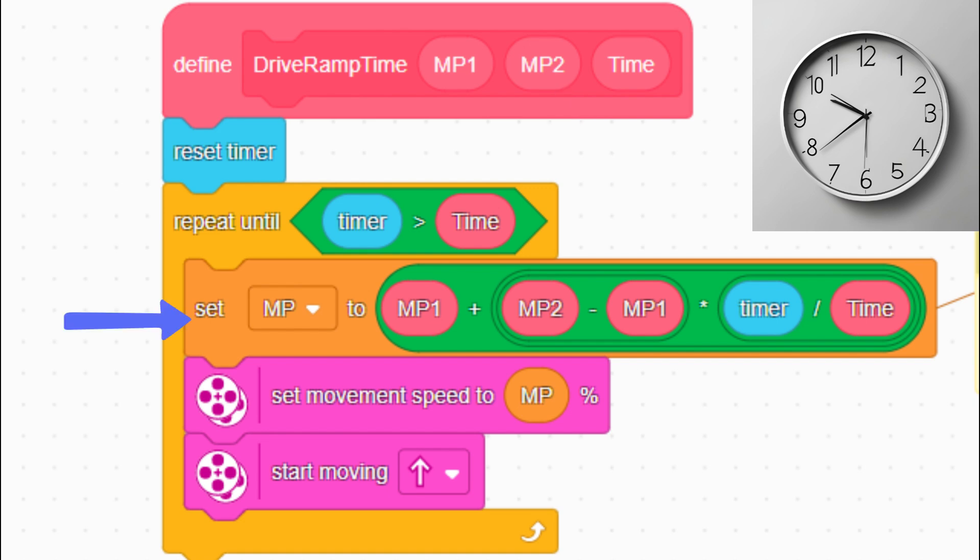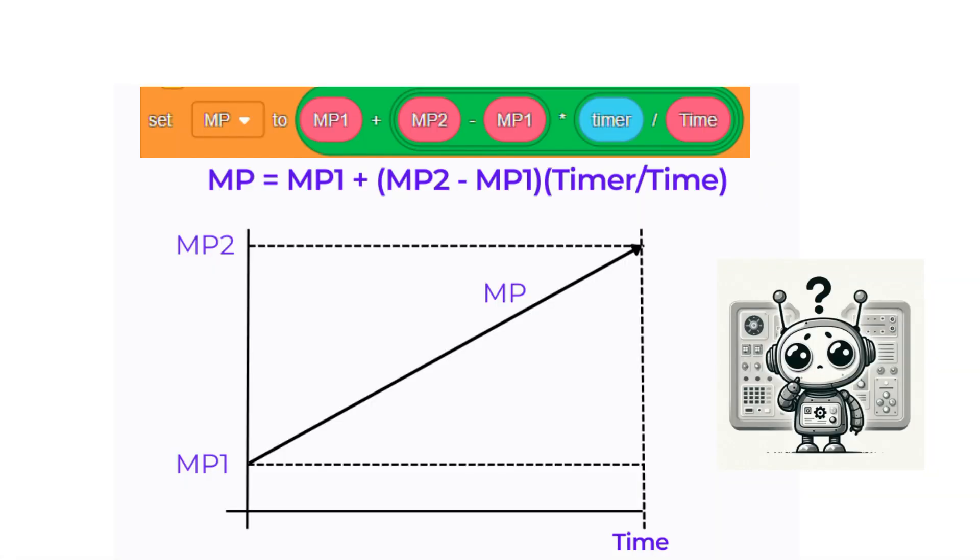So we make variable MP using the equation, then we use MP for the movement speed. Here we see the calculation for MP. When the timer starts, MP equals MP1. When the timer gets to time, MP equals MP2. In between, MP changes from MP1 to MP2.